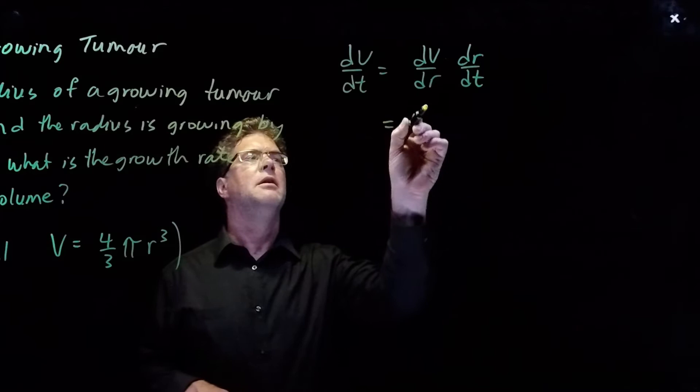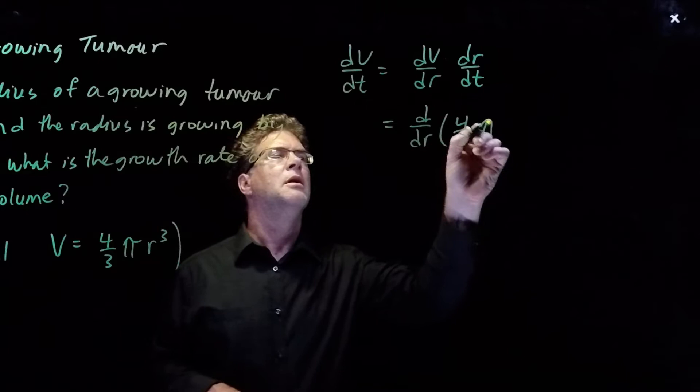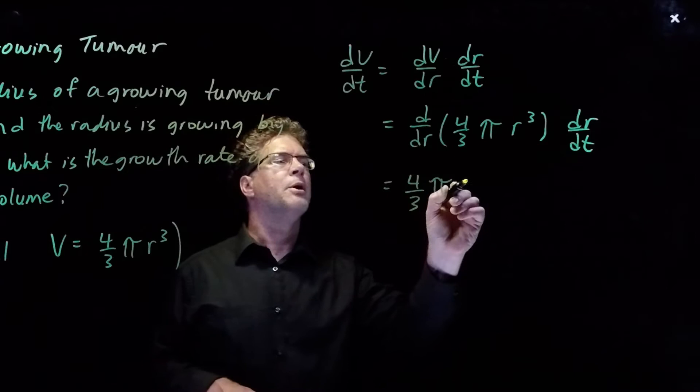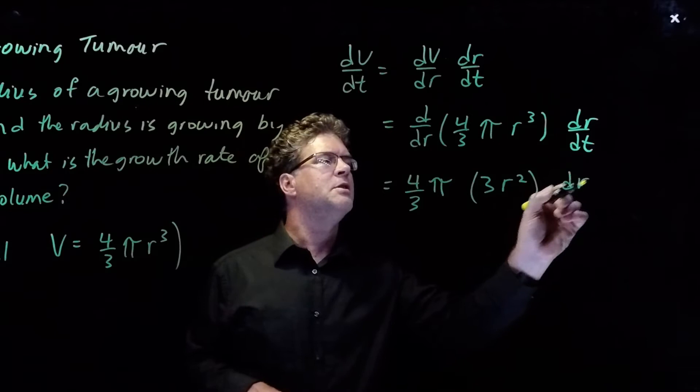And dV/dr comes from this formula here, so that's the derivative with respect to r of four-thirds pi r cubed. And then we're multiplying through by dr/dt. We can pull out the constants, four-thirds pi, and then we're going to write three r squared and then times dr/dt.